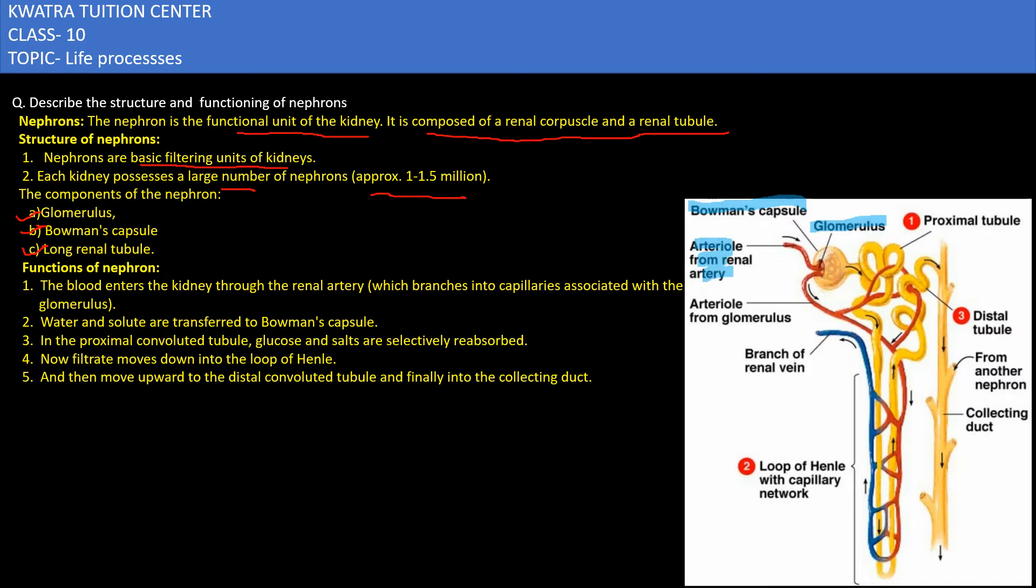Now if we talk about the functions of these three components, blood enters the kidneys through the renal arteries. Then the renal arteries are branched in capillaries.